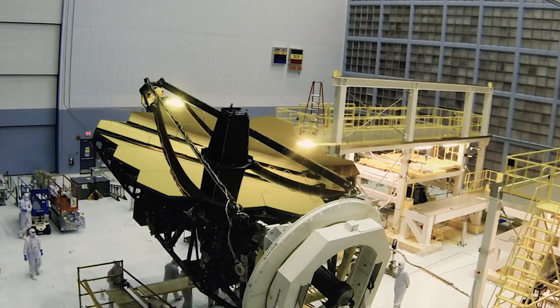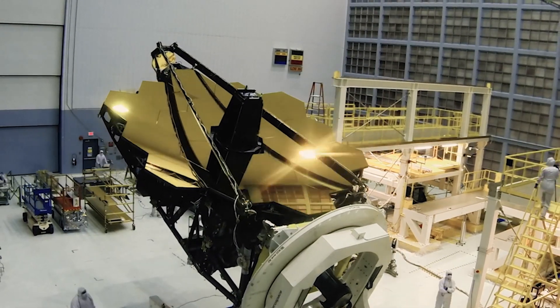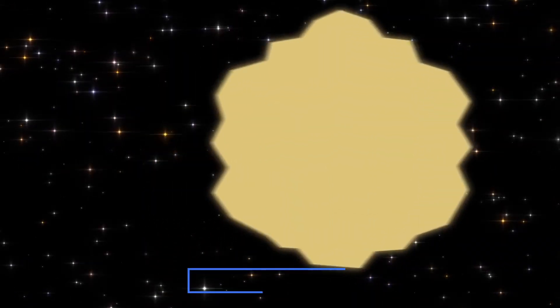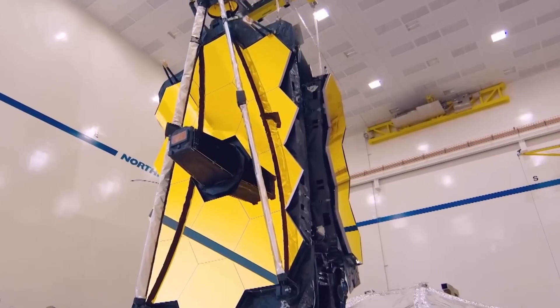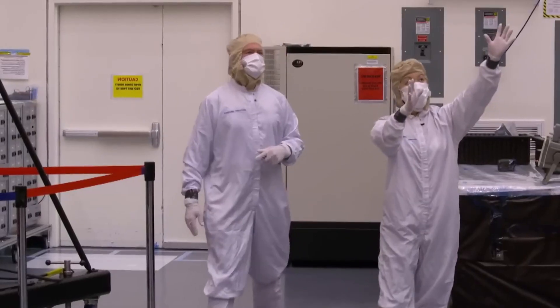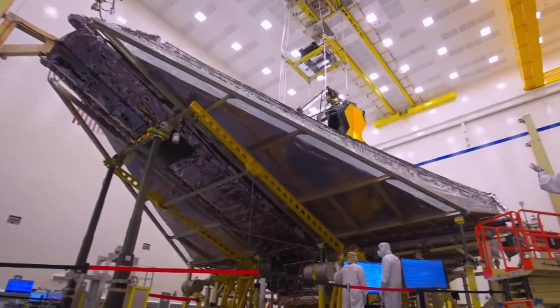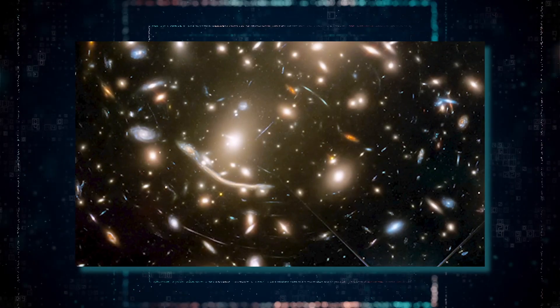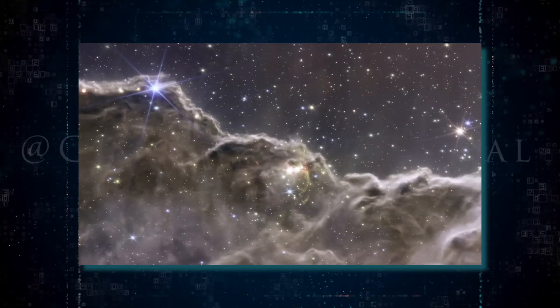The other thing that makes it absolutely incredible is the precision with which it's been made. If the mirror was stretched to be the size of the United States, and you were to measure the size of the biggest bumps and dips on the mirror, you're only looking at a bump or a dip of order one centimeter in size. It's absolutely incredible. And that's what generates the near-perfect images from the primary mirror.